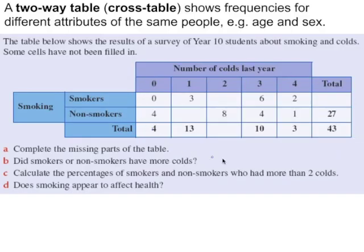The final method for displaying data that I'm going to demonstrate in this lesson is the two way table or cross table. The table shows frequencies for two different attributes of the same people. In this case whether they smoke or not and the number of colds that they had in the previous year. Each column and each row also has a total.